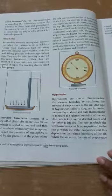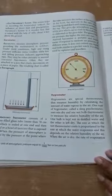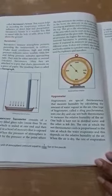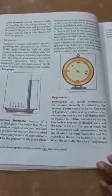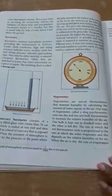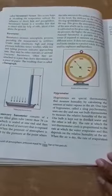Aneroid barometer is portable. Therefore, it is easier if required to measure air pressure of different areas. It does not contain any liquid and looks similar to a pocket watch. It is often used by explorers and travelers.